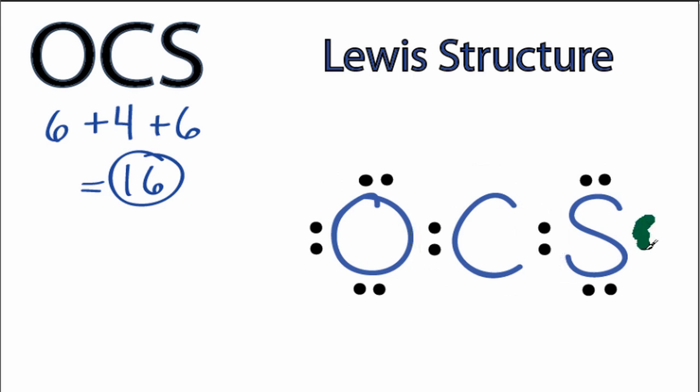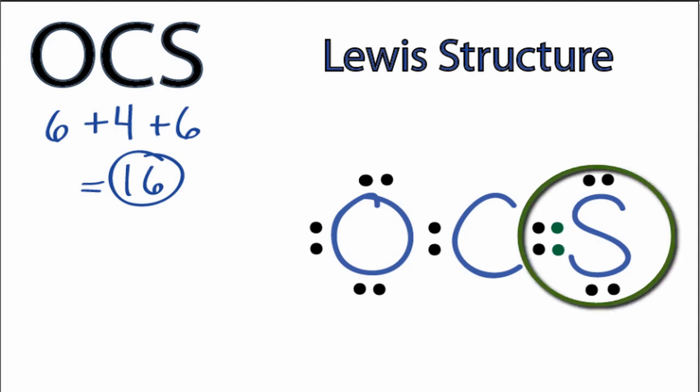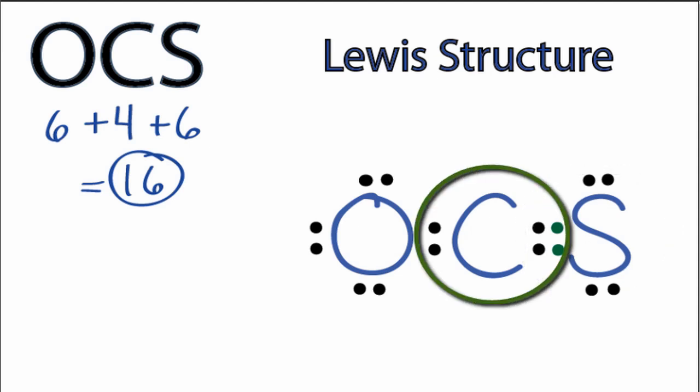Let's take two valence electrons here and share them with the carbon to form a double bond. The sulfur still has eight valence electrons, but now the carbon has six valence electrons, and we're still only using 16 valence electrons for the OCS Lewis structure.